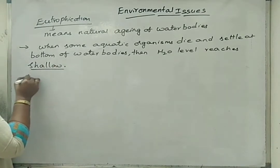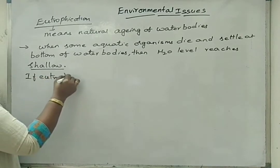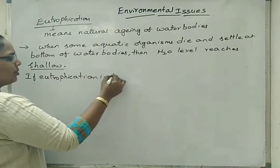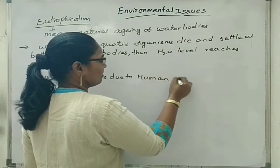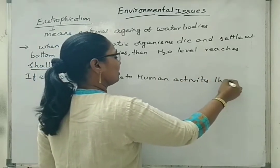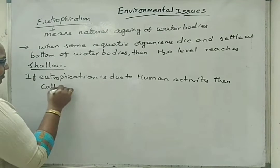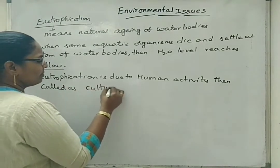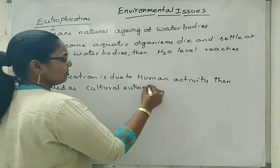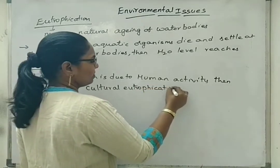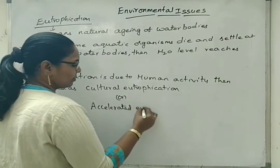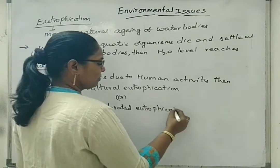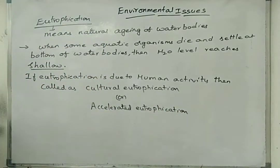If eutrophication is due to human activity, then it is called as cultural eutrophication or accelerated eutrophication. This process is called cultural eutrophication or accelerated eutrophication.